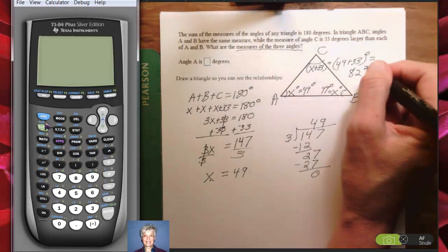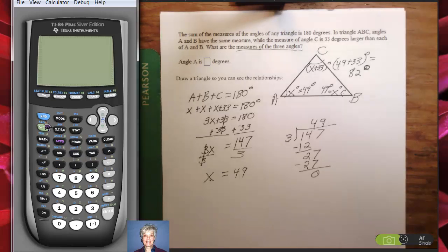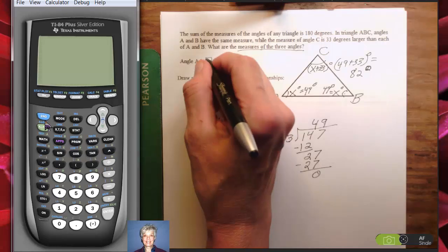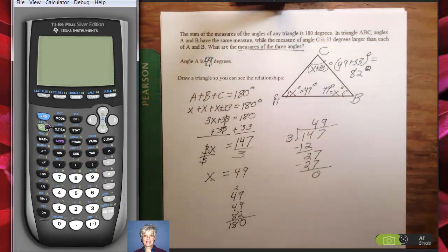Let's check and make sure that I didn't make an arithmetic mistake. 49 plus 49 plus 82. 9 plus 9 is 18, plus 2 is 20. Write down the 0, carry the 2. 2 times 4 is 6, wait, 2 plus 4 is 6, plus 4 is 10, 10 plus 8 is 18. Yes, that works. So my angle A is 49 degrees, but I'm fairly certain that after you answered 49 degrees in MyMathLab, then it's going to come up with, what is angle B? You would say 49 degrees. What is angle C? You would say 82 degrees.